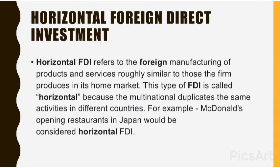Horizontal foreign direct investment refers to the foreign manufacturing of products and services similar to those the firm produces in its home market — so similar products are produced in a foreign country. This type of FDI is called horizontal because the multinational duplicates the same activities in different countries. For example, McDonald's opening restaurants in Japan.